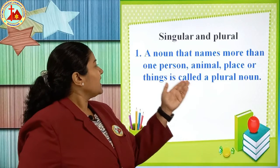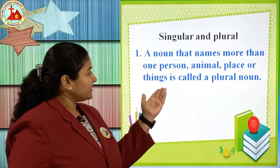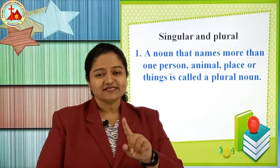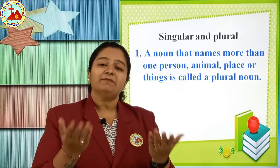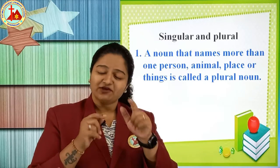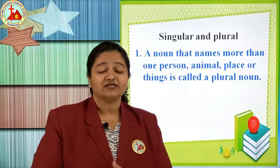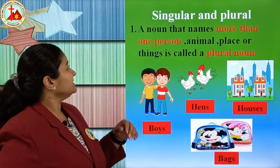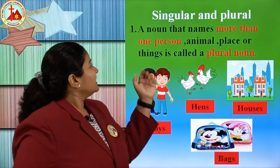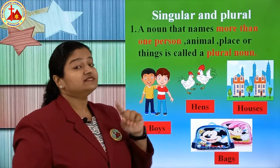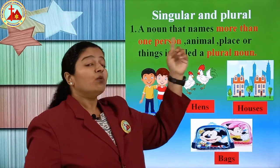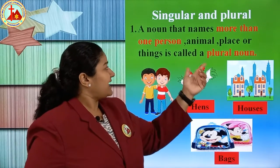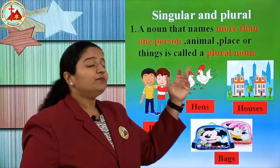A noun that names more than one person, animal, place or thing is called a plural noun. One means singular and more than one means plural. If one picture, then singular, and more than one — you can see three boys, you can see three birds — then that is plural. More than one person, animal, place or things is called a plural noun.